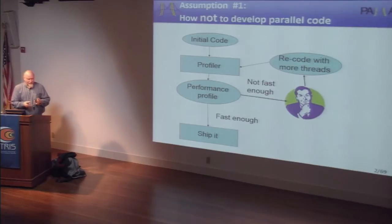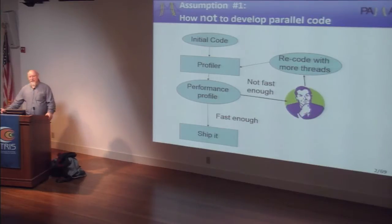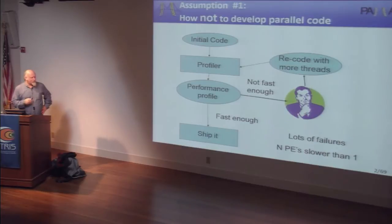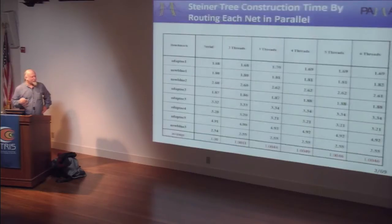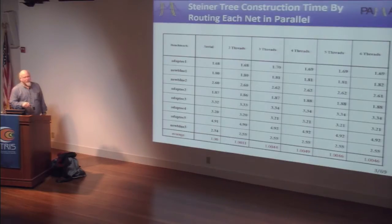You may think this is a straw man, but if you complain to a vendor that your parallel processors aren't fast enough, they'll ship out an application engineer who tells you exactly that. And what's wrong with it? It's very common to go through this whole process and have your multi-processor version run slower than your sequential version.